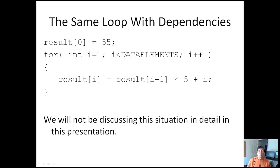Just for the sake of comparison, let's talk about a loop that does have dependencies. Here we start off with result sub 0 equals 55, and then we loop through the rest of the elements in the array. For each one, result sub i equals result sub i minus 1 plus other calculations. Basically, it depends on the results of another iteration, so we say this loop has dependencies and it's not as simple as running each one independently. I just wanted to show you this for contrast, but we will not be discussing this situation in detail.